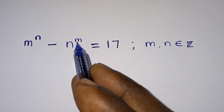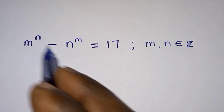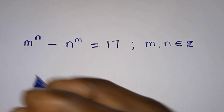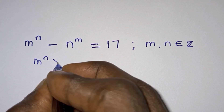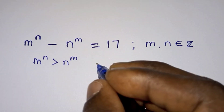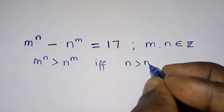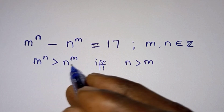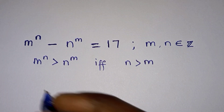We are given m to the power n minus n to the power m, which is positive on the right hand side. So what it means is that m to the power n is greater than n to the power m. This could also be true if and only if n is greater than m, even if we don't know the sign here — m to the power n is greater than n to the power m provided n is greater than m.